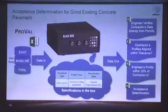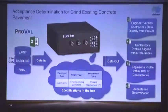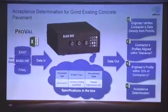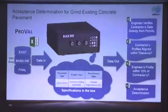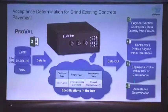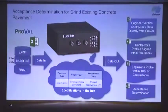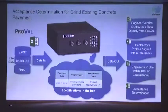For grinding existing concrete, there is not a payment adjustment sheet but rather a worksheet to determine acceptance. It will look similar to the payment adjustment sheets where profile information is brought in and verified. The RE uses the worksheet to check four items and determine whether the final runs can be accepted.